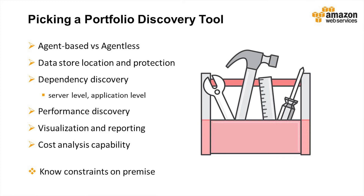Agent-less methods do not require any software pre-installed on the machines. Instead, to collect data, a discovery server connects to the machines using remote access methods such as SSH and PowerShell. The agent-less method requires credentials to access the machines. You need to make a trade-off decision based on the pros and cons of these two methods.